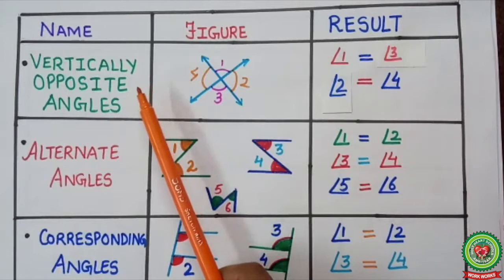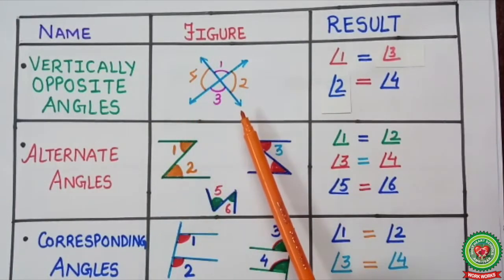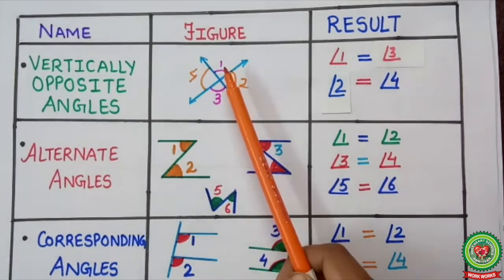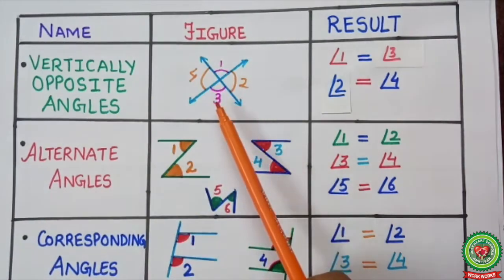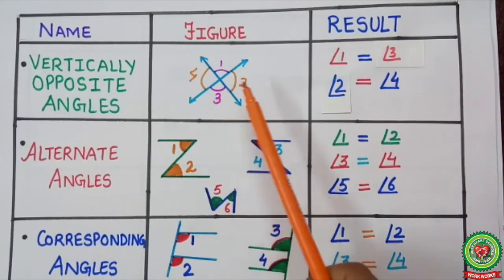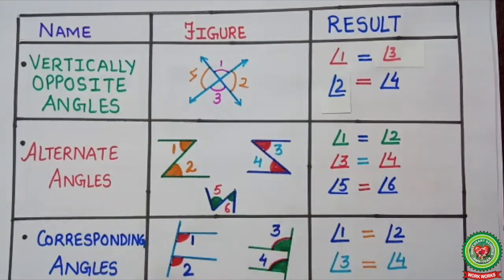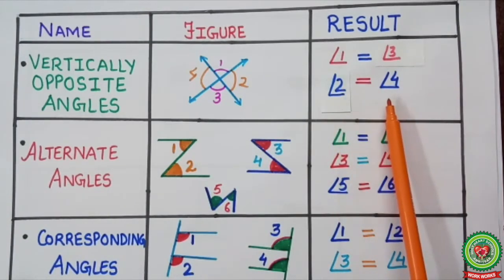Now let's see the types of angles. The first type is vertically opposite angles. When a line cuts another line at a point, there will be opposite angles known as vertically opposite angles. Here, angle one and angle three are vertically opposite angles. Similarly, angle two and angle four are also vertically opposite angles. Vertically opposite angles are equal.